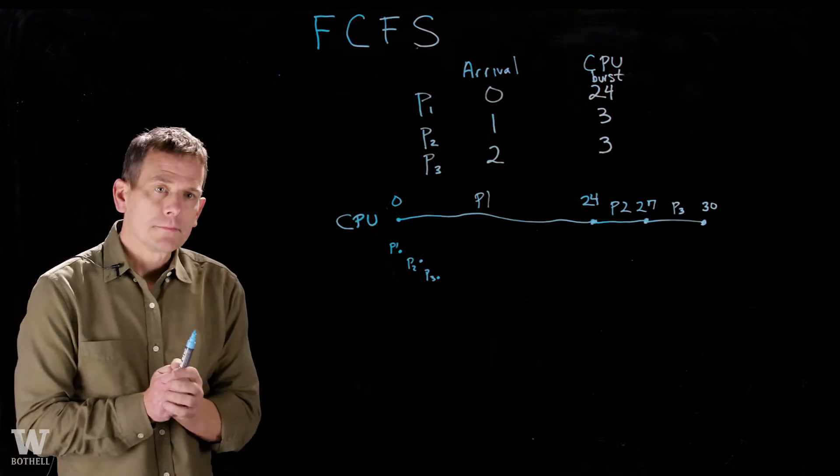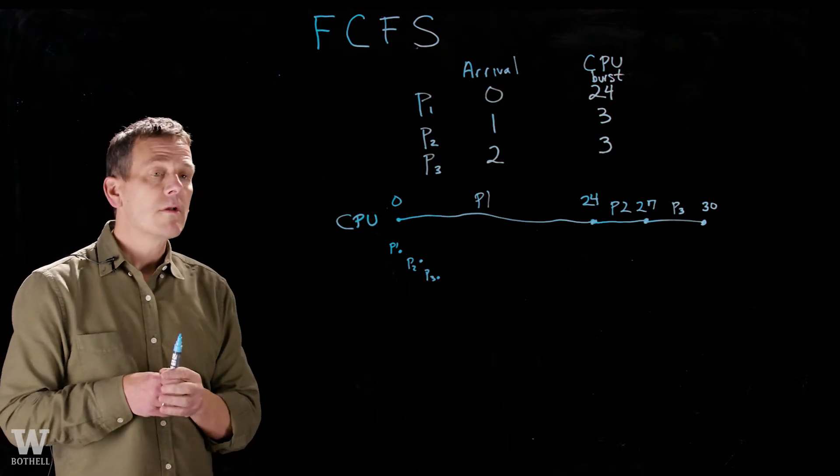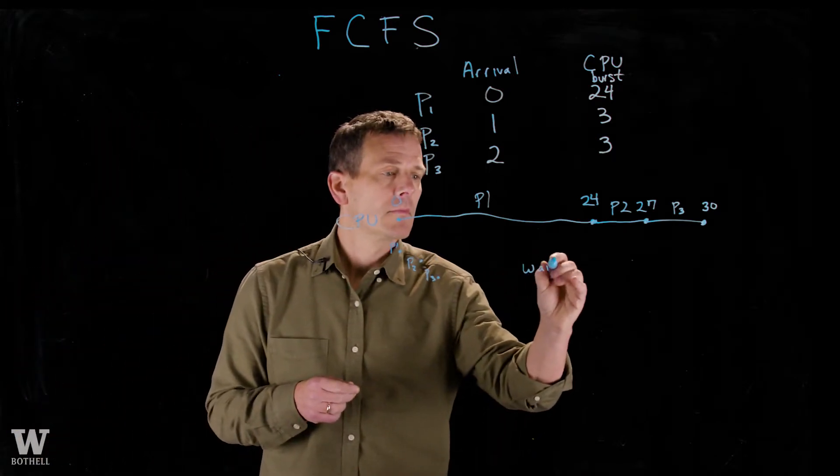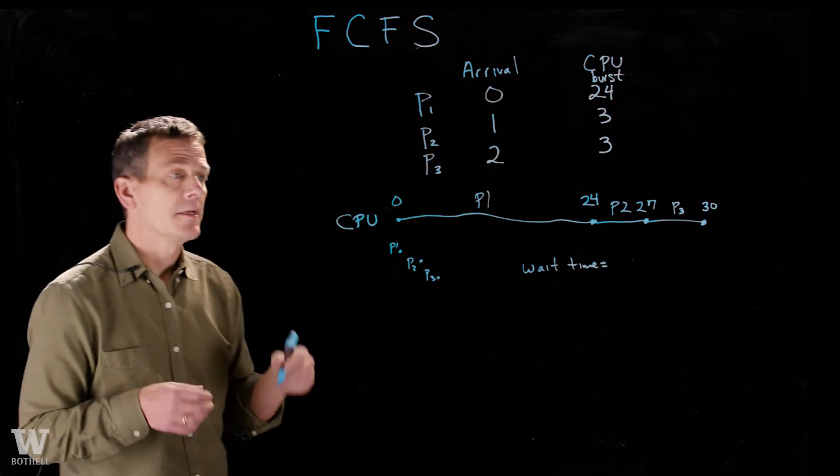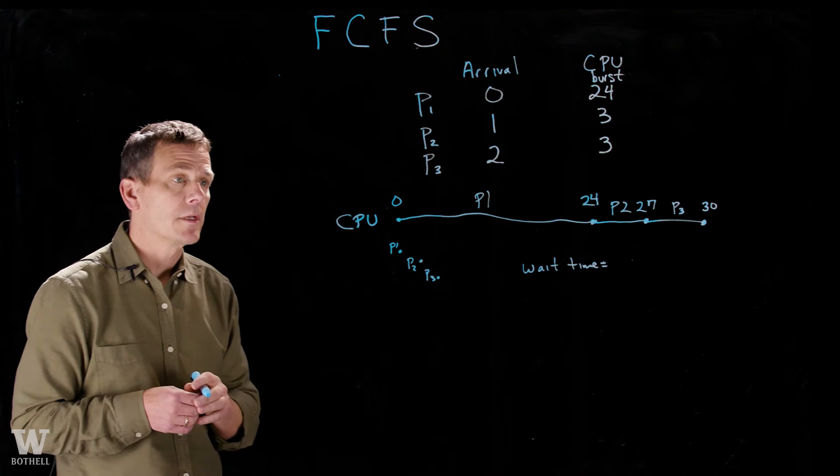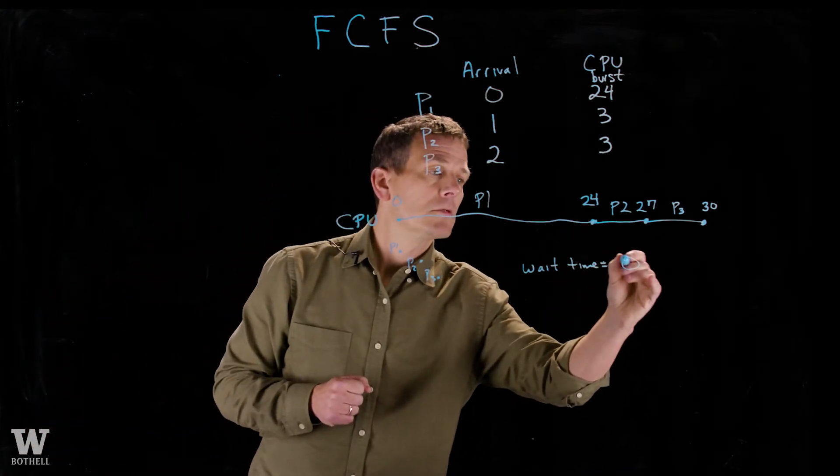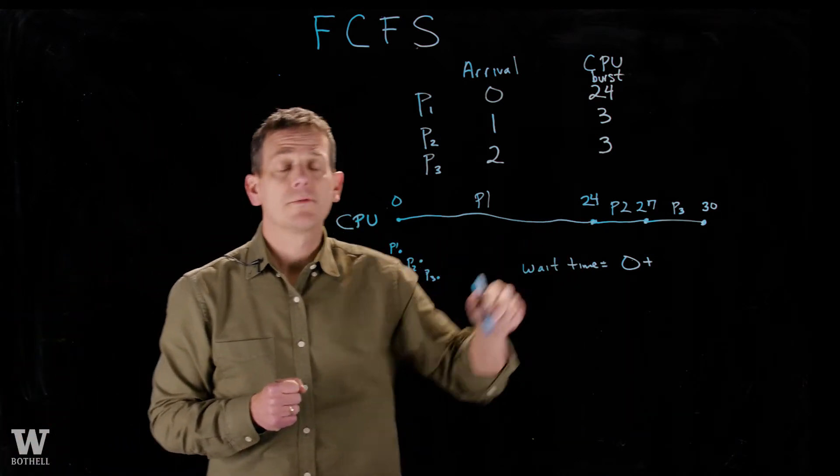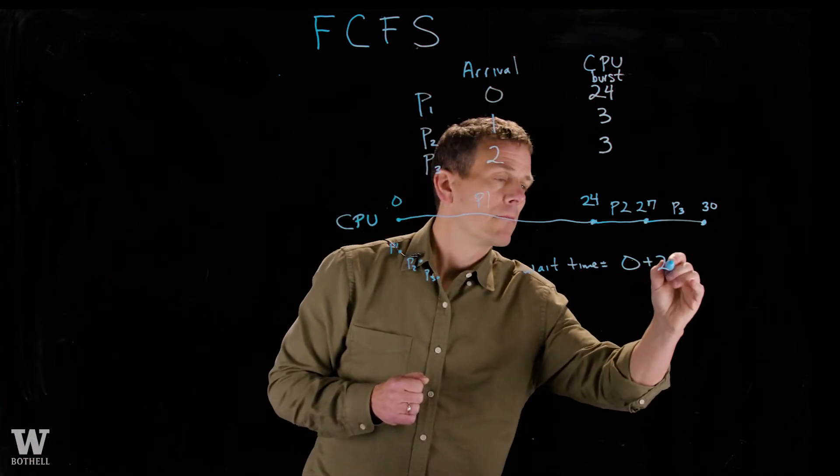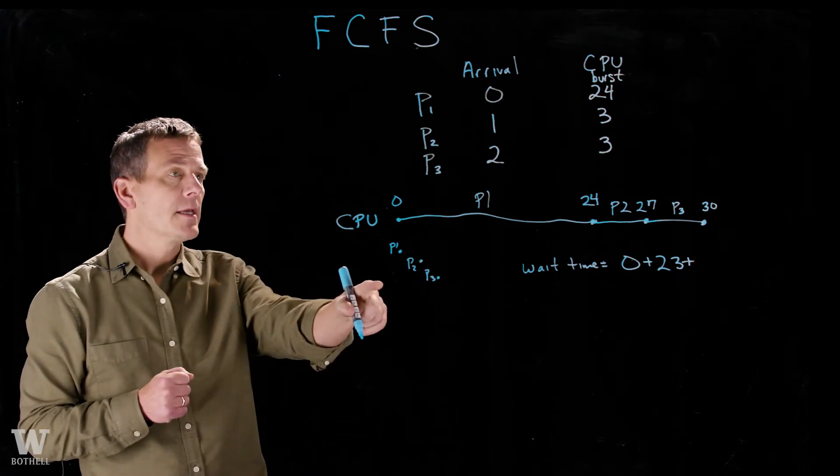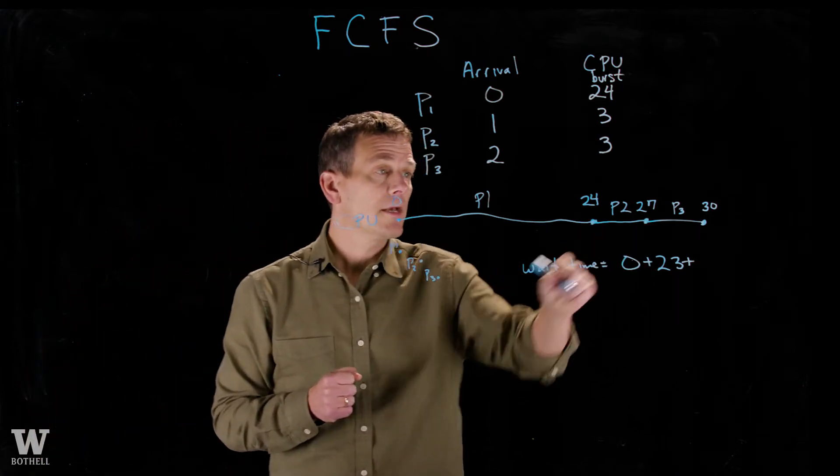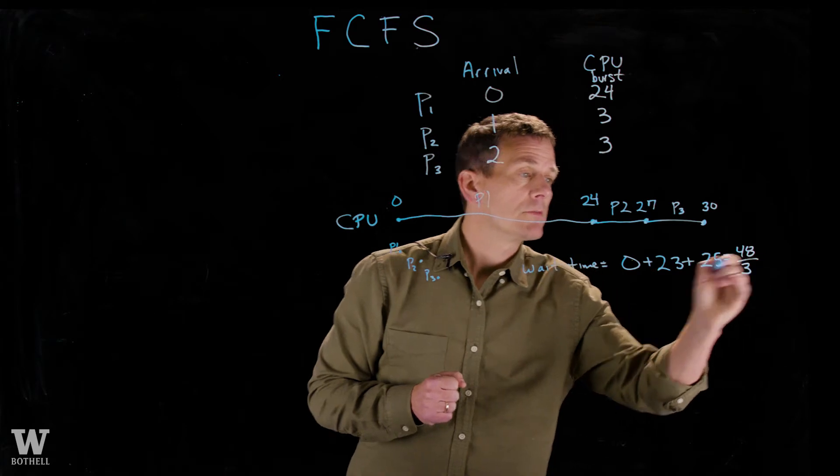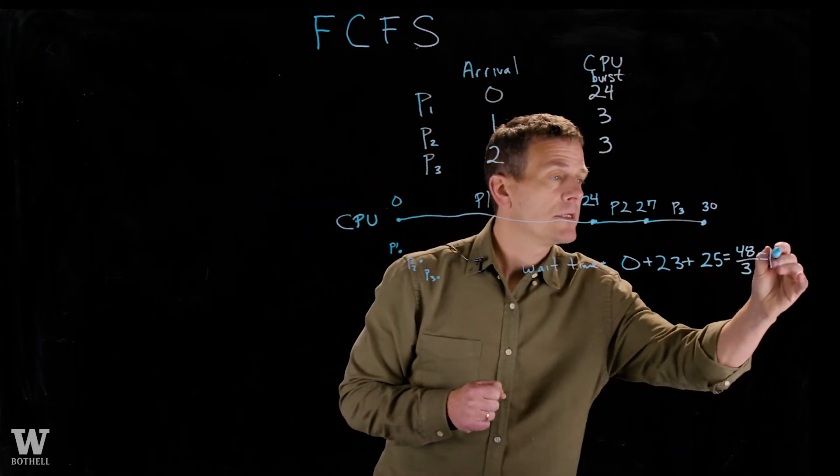How do we know if this is a good algorithm? Well, to compare algorithms, we have different metrics that we use. One of them is called wait time. So let's find the average wait time for these processes. The average wait time is just what it sounds like, the amount of time that the process waits in the system without running. Notice P1 doesn't wait at all, so we'll put a zero for that. P2 came in at time 1, got scheduled at time 24, so it waited 23 units. And then finally, P3 came in at time 2, was scheduled at time 27, so it waited 25 units. Total time amongst the three processes was 48. We divide that by 3, we get an average wait time of 16.